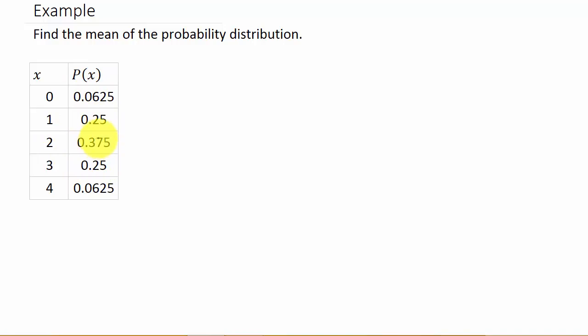Now remember, in order for this to be a probability distribution, all of these probabilities have to sum to 1. So when you add all of these up, all of these probabilities up, they have to equal 1. And you can try it. All these add up to 1.